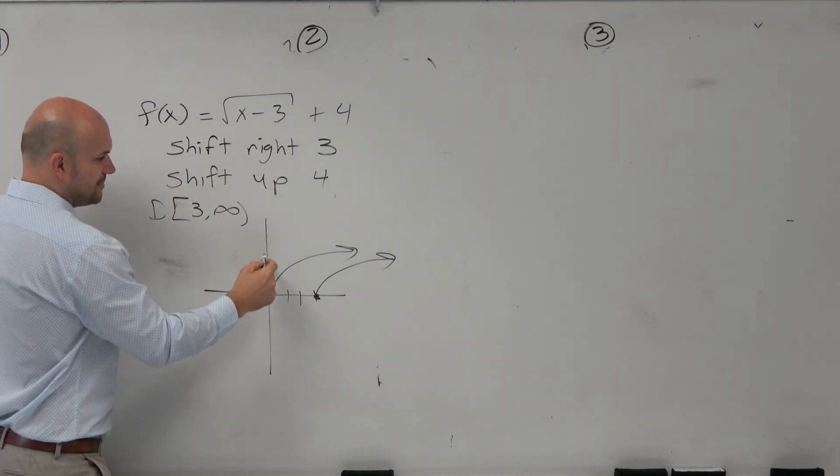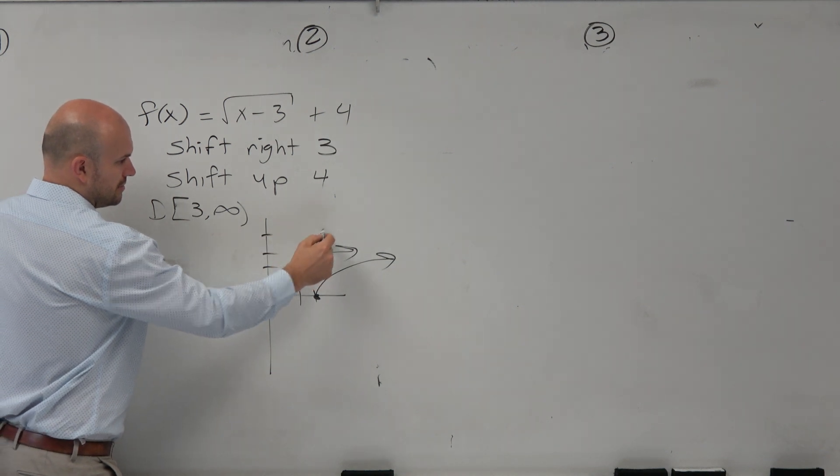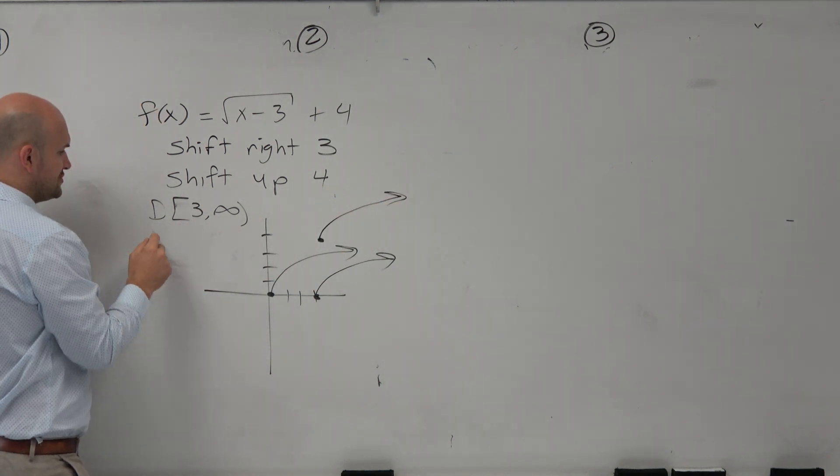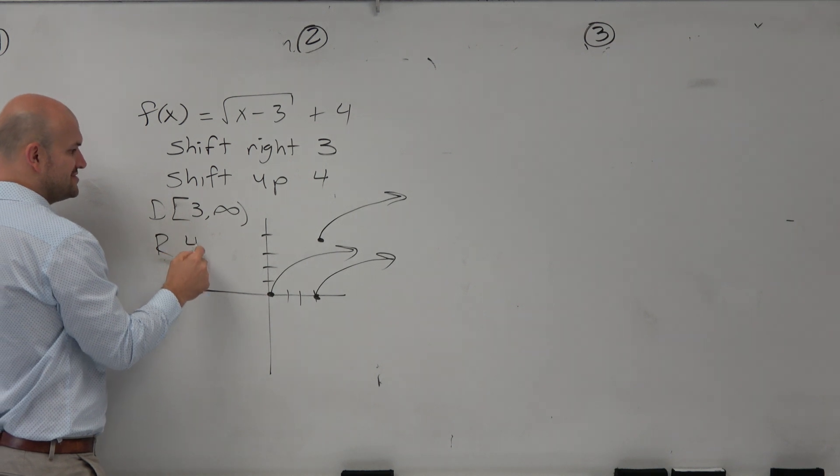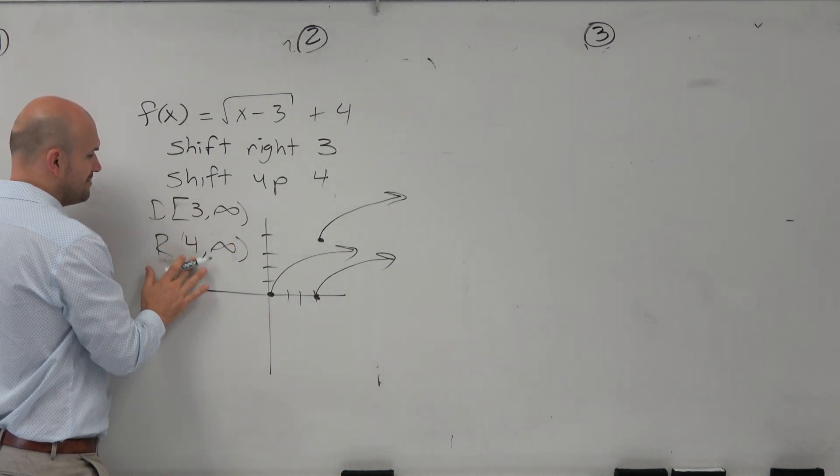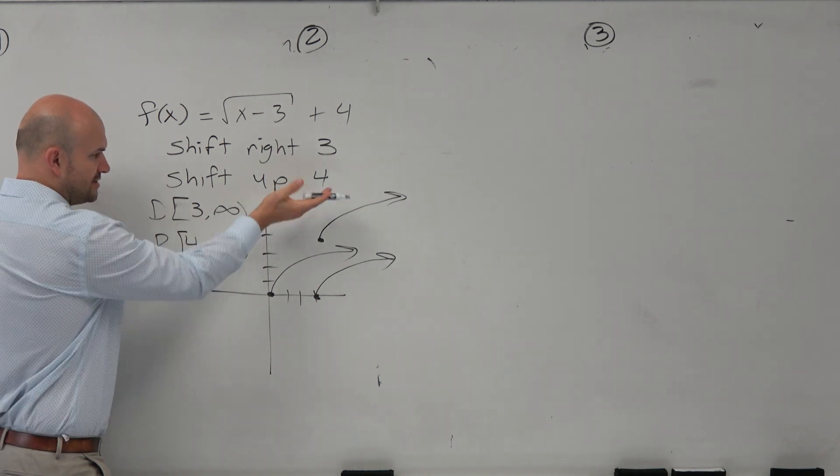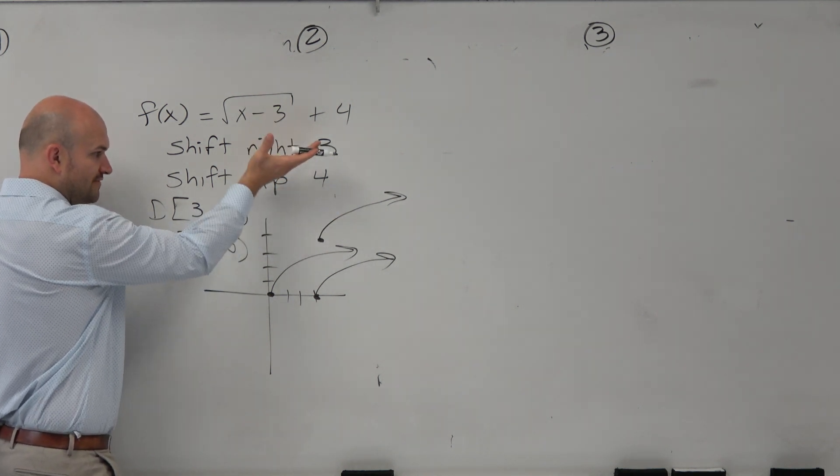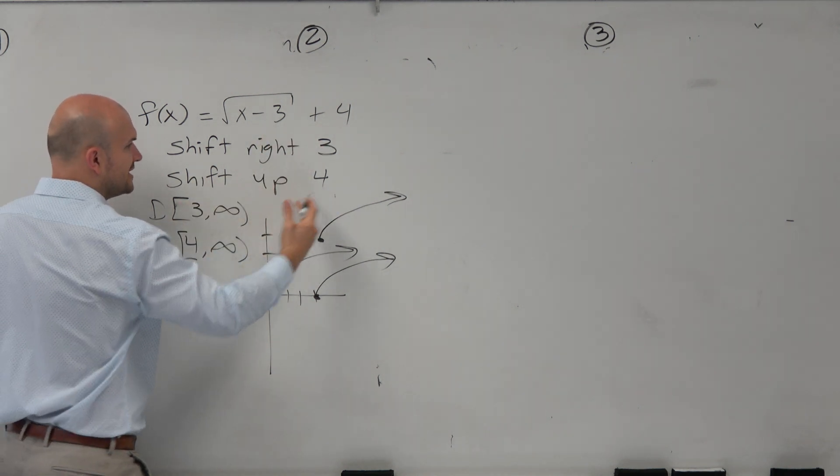And then if I shift the graph 4 units up, what is my new range? 4 to infinity. Remember, range is the set of all y values. Domain is the set of all x values. So now this graph is going as low as 4 up to infinity, and as far to the left is 3 to infinity.